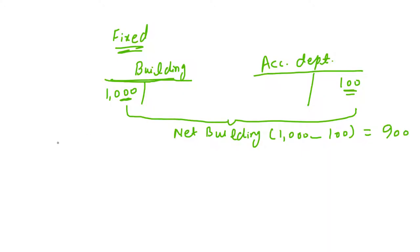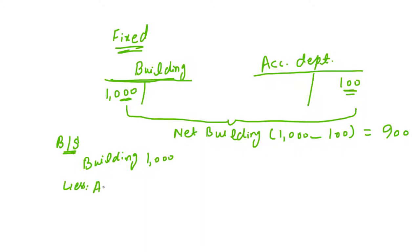We represent the building on our balance sheet, because the balance sheet represents the asset, liabilities, and equity sections. We write the building balance, then subtract the accumulated depreciation of the building — in this case 100 — giving us 900 to represent on the balance sheet.